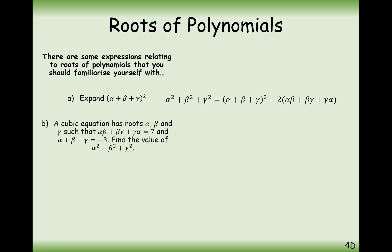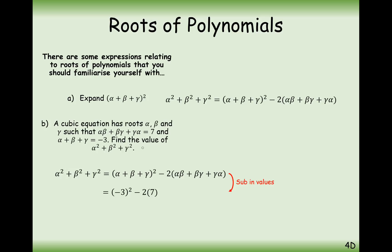So in part b here, we're going to have to use what we've done before. A cubic is given with roots alpha, beta and gamma. The sum of the doubles is equal to seven, and the sum of the single roots is equal to minus three. Find the value of alpha squared plus beta squared plus gamma squared. We just apply the formula: minus three squared — the sum of the singles — squared, then minus two times seven. So the sum of the squares is minus five.